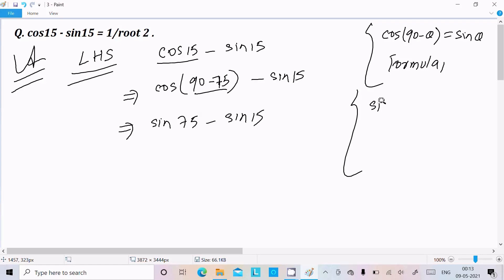For the formula sin C - sin D, we need to write 2 cos[(C+D)/2] × sin[(C-D)/2]. So here we have 2 cos[(75+15)/2] × sin[(75-15)/2].